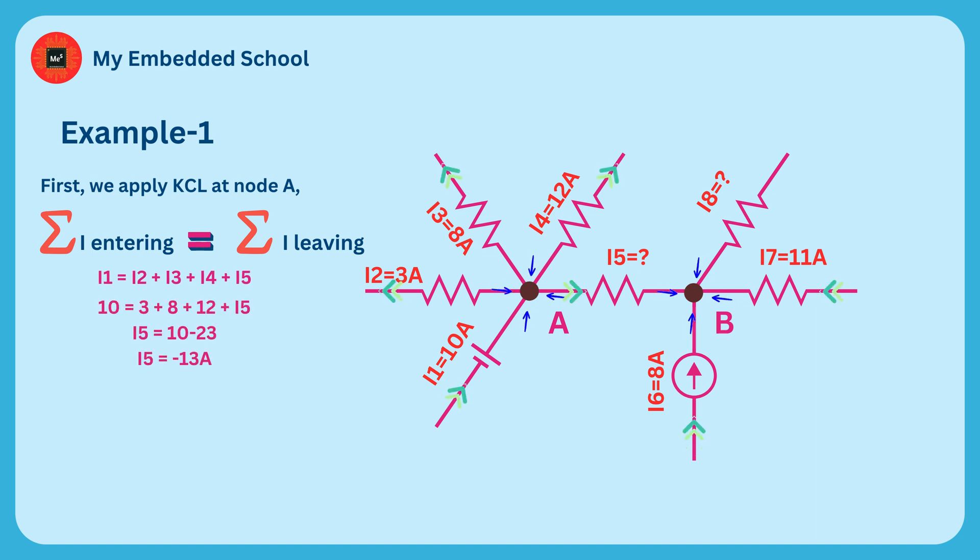We get the result from this equation: I5 equals minus 13 amperes. The value of current I5 is negative, which means the direction of current I5 is opposite to what we have assumed. If we first assumed that the direction of the current entering the node was positive, then the answer would be positive, and that is I5 equals 13 amperes.